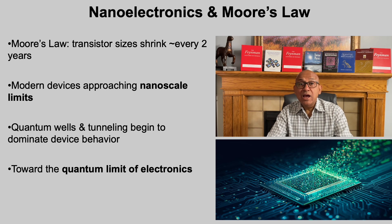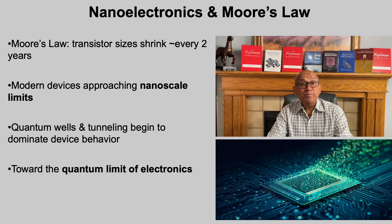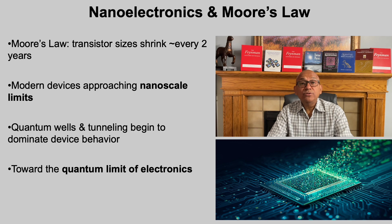Scanning tunneling microscopy showed us how quantum effects can be harnessed for imaging. But tunneling also appears in something much closer to everyday life — transistors. For decades, Moore's law has driven the miniaturization of transistors, doubling the number that fit on a chip roughly every two years. But as we shrink devices into the nanometer range, their behavior changes fundamentally. Transistors stop behaving like simple classical switches and begin acting like quantum valves with discrete energy levels. Barriers that once seemed impenetrable now allow tunneling currents to leak through. In other words, Moore's law has brought us to the edge of the quantum limit of electronics, where device design must account for quantum mechanics directly, not just as a small correction.